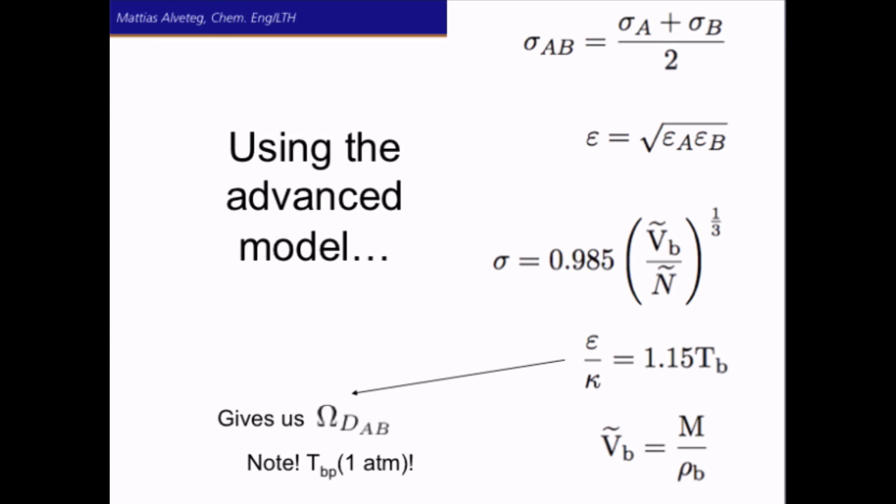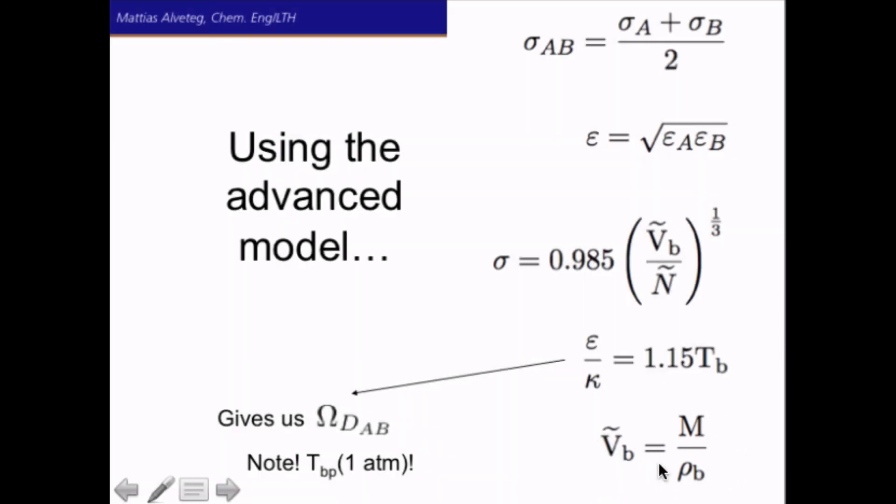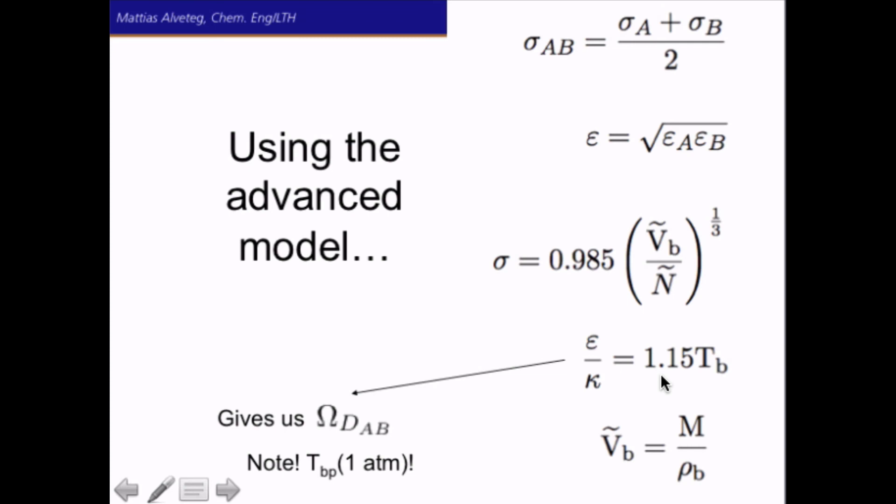We need to calculate average values. So for the collision diameter, we take a simple average. For a characteristic energy, we take the average in another way. If we don't know the collision diameter, we can estimate that from this equation here, the molar volume at the boiling point. If we don't know that, but know the density at the boiling point, we can use this equation. And if we don't even know that, we can use the contribution method, which we will come back to soon. And if we don't know the characteristic energy, but know the boiling point, we can use this equation to estimate the characteristic energy. And this kappa here is Boltzmann's constant.